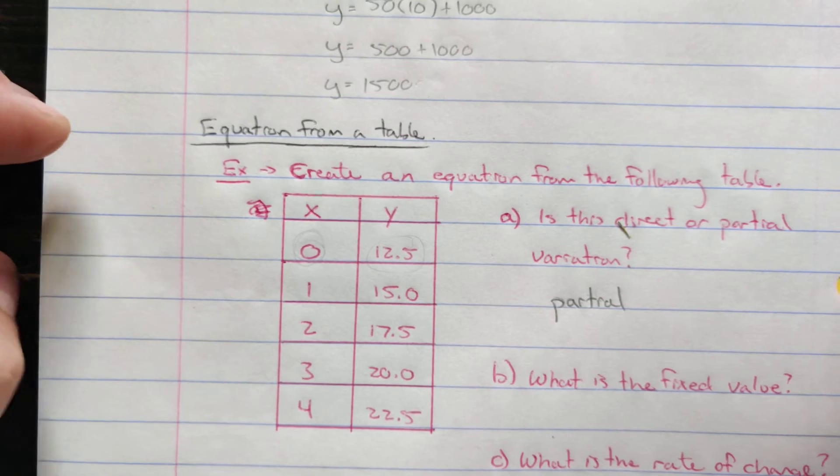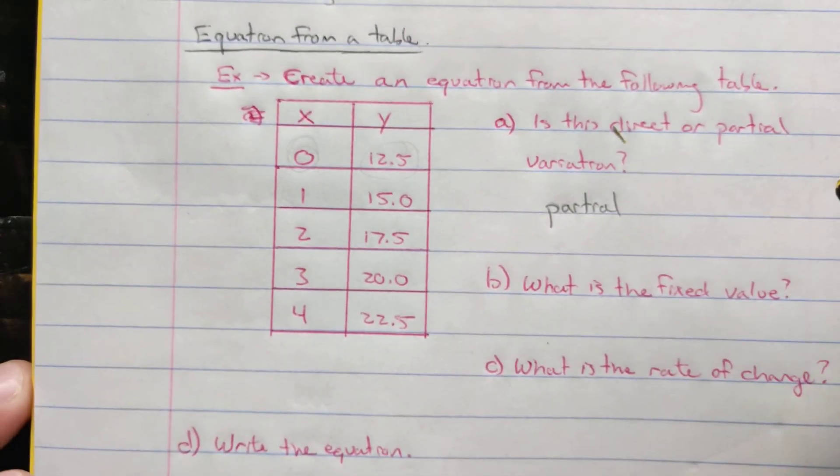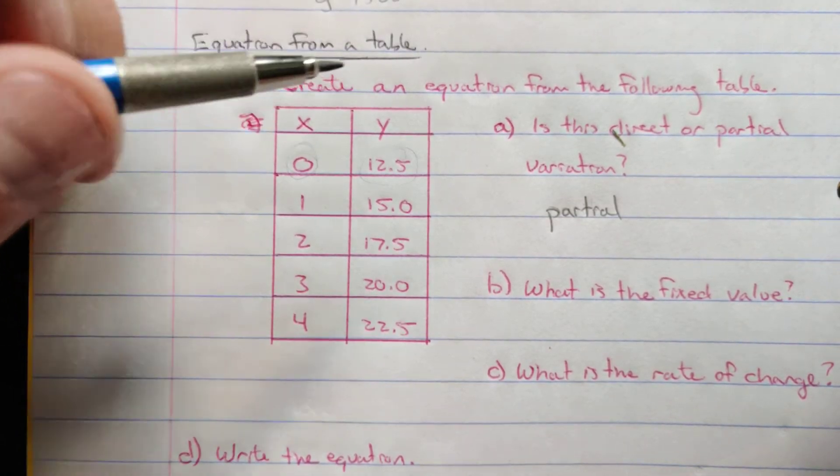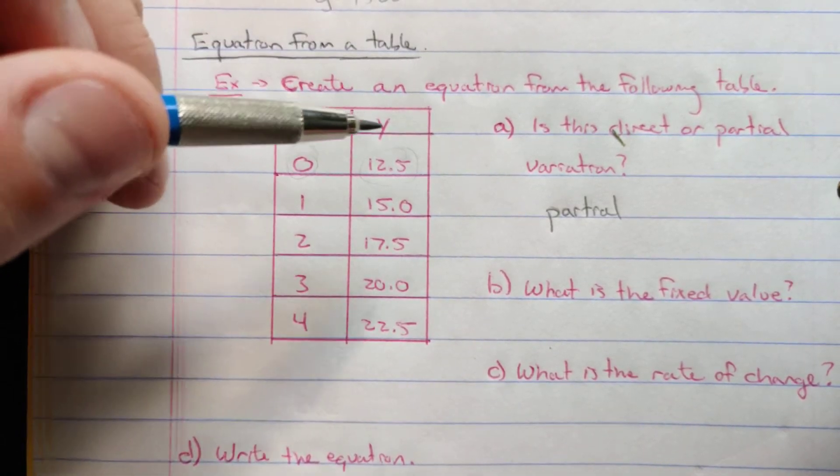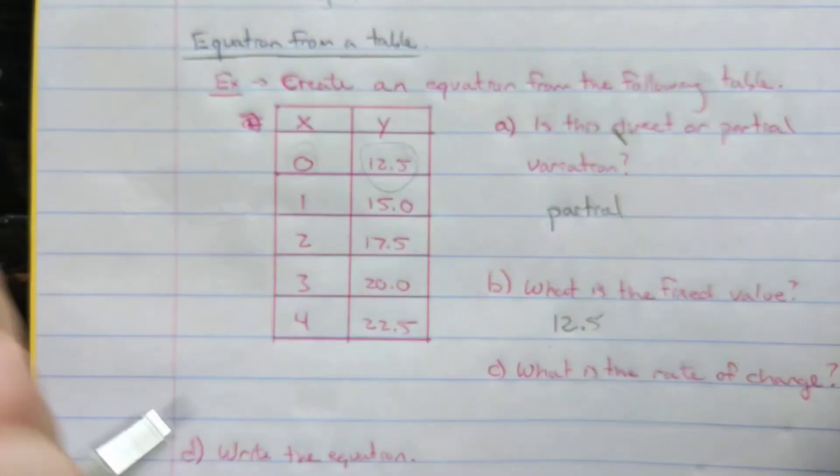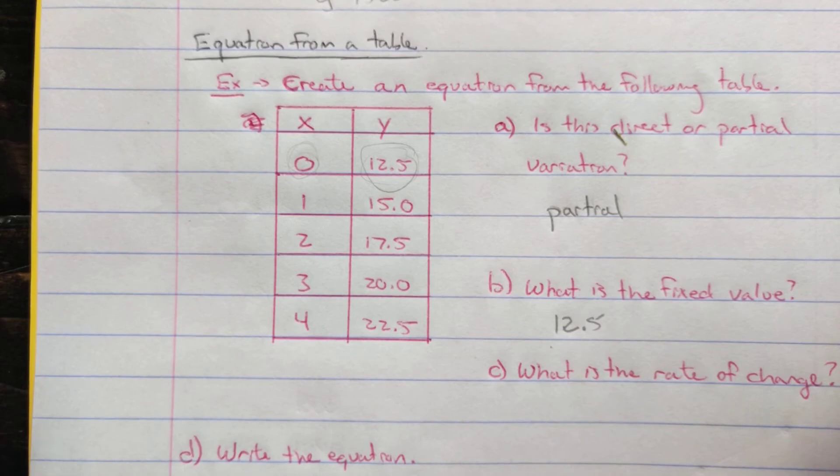What is the fixed value? So that fixed value, that initial value, where does it start at? 12.5. So our initial value, our fixed value, is at 12.5.